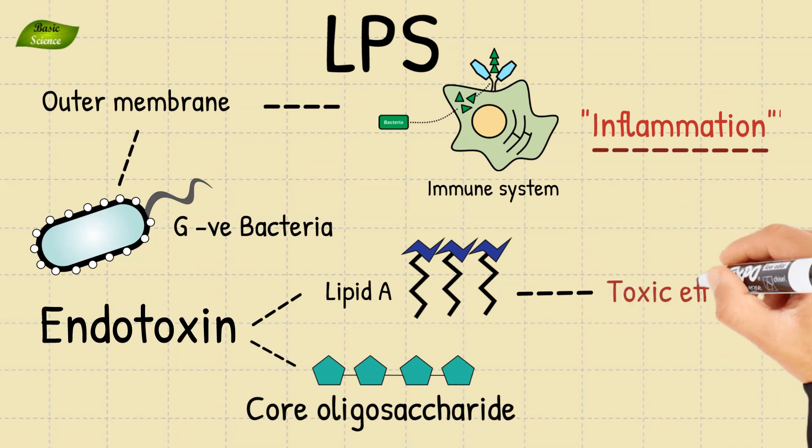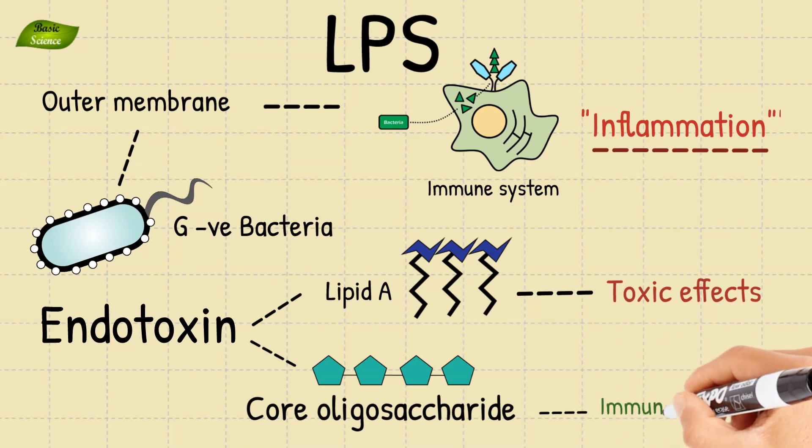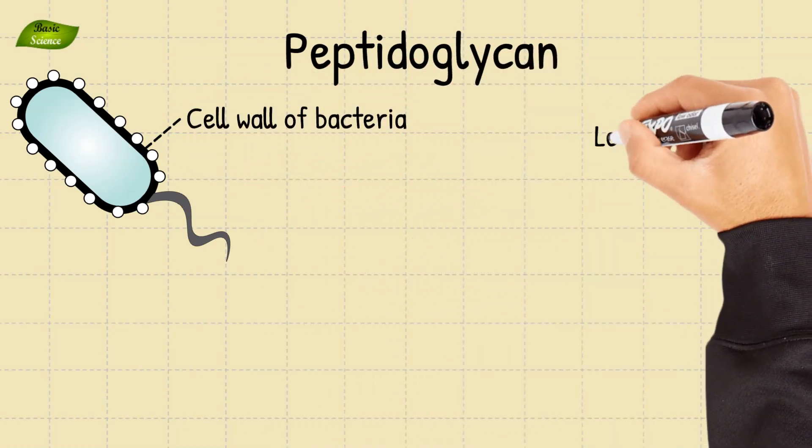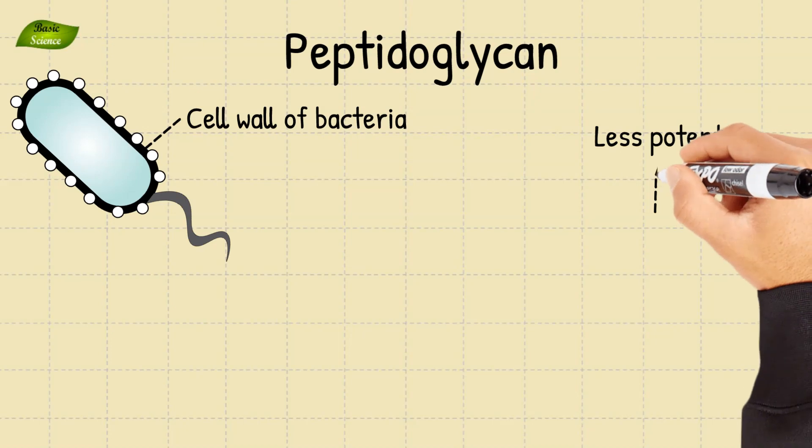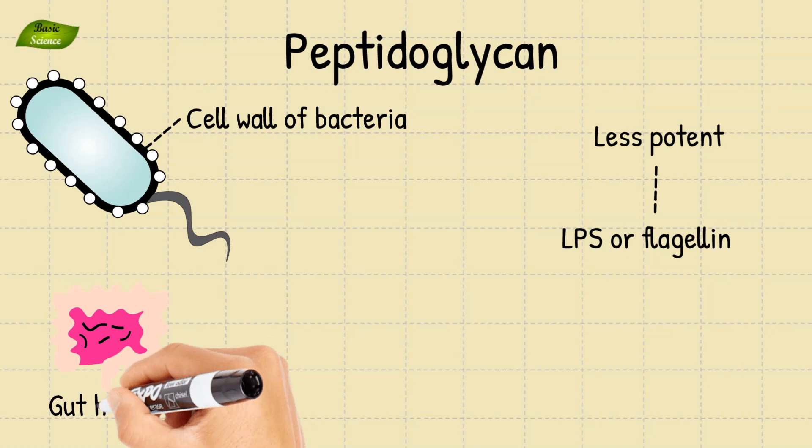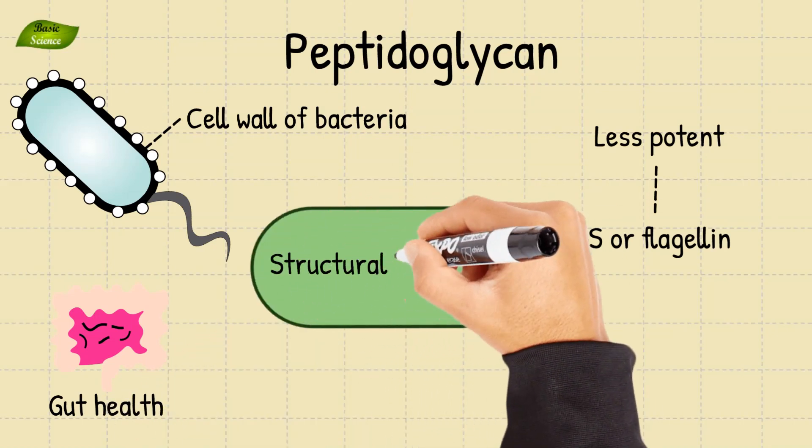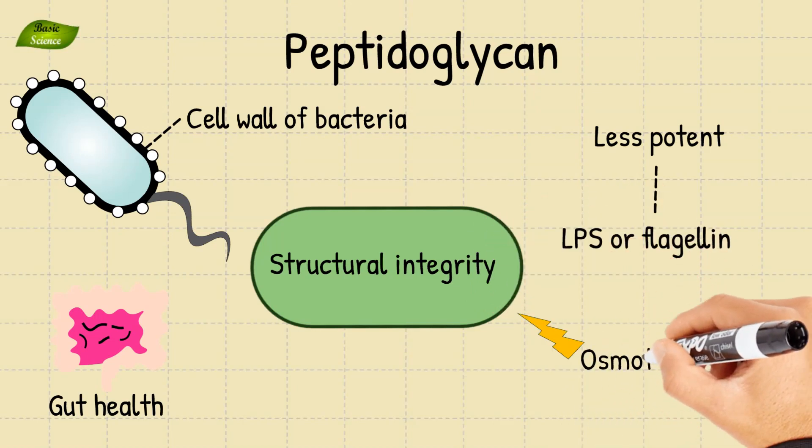Peptidoglycan is a component of the cell wall of bacteria. It is a less potent stimulator of the immune system than LPS or flagellin but still plays an important role in maintaining gut health. Peptidoglycan contributes to the structural integrity of the bacterial cell wall, providing protection against osmotic stress and other environmental challenges.